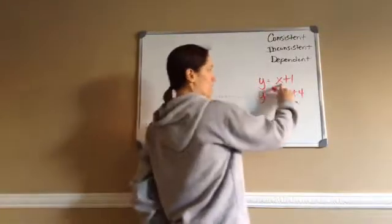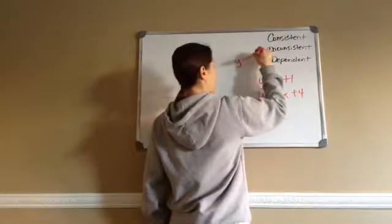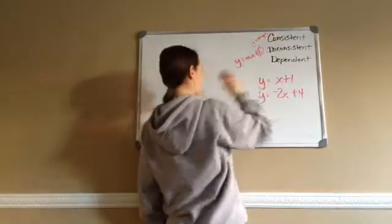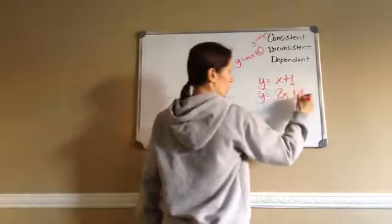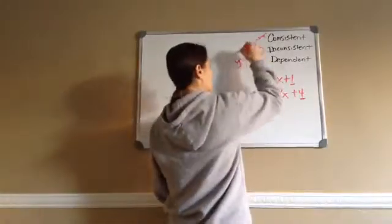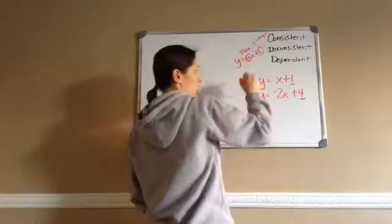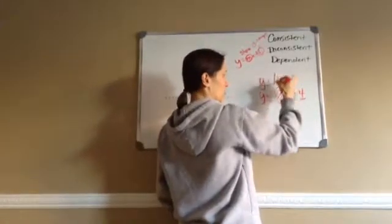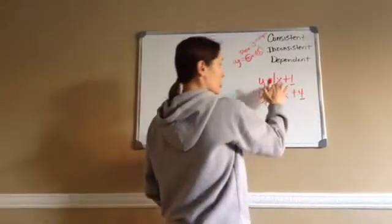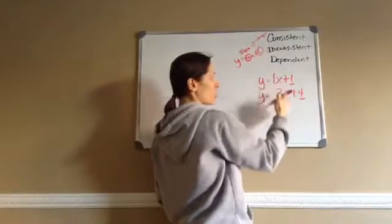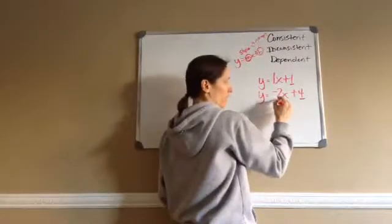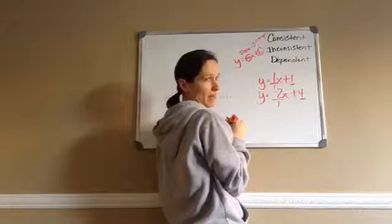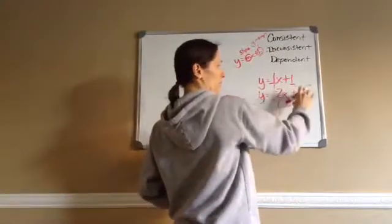Remember, we're trying to use y equals mx plus b. The b is the y-intercept — that's where you start with your dot. The m is the slope, and the slope is rise over run. Now if there's not an m shown, there is still a 1 there, because 1x is at least 1x. So on the second equation, the slope would be negative 2, which is negative 2 over 1. And 1 over 1 is the same thing as 1.